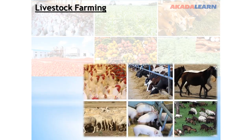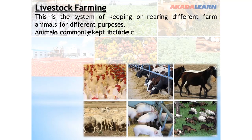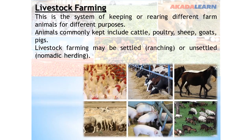Next, we have livestock farming. This is a system of keeping or rearing different farm animals for different purposes. Animals commonly kept include cattle, poultry, sheep, goats, pigs, and many more. Livestock farming may be settled, that is ranching, or unsettled, that is nomadic herding.